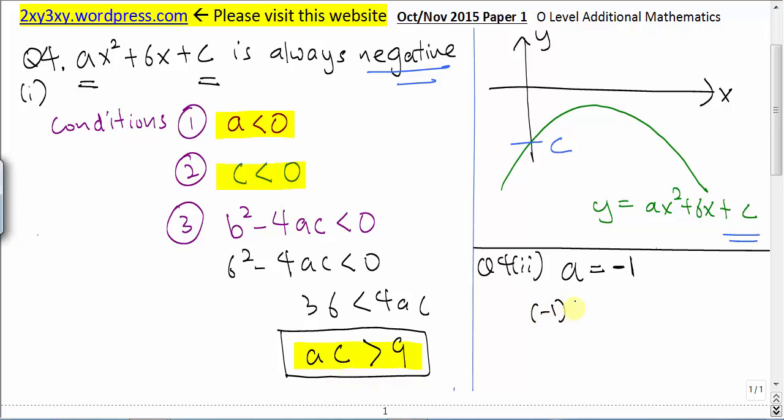So negative 1 multiplied by c must be greater than 9. So c must be multiplied by a negative on both sides of the equation. So this sign will change, c will be less than negative 9.